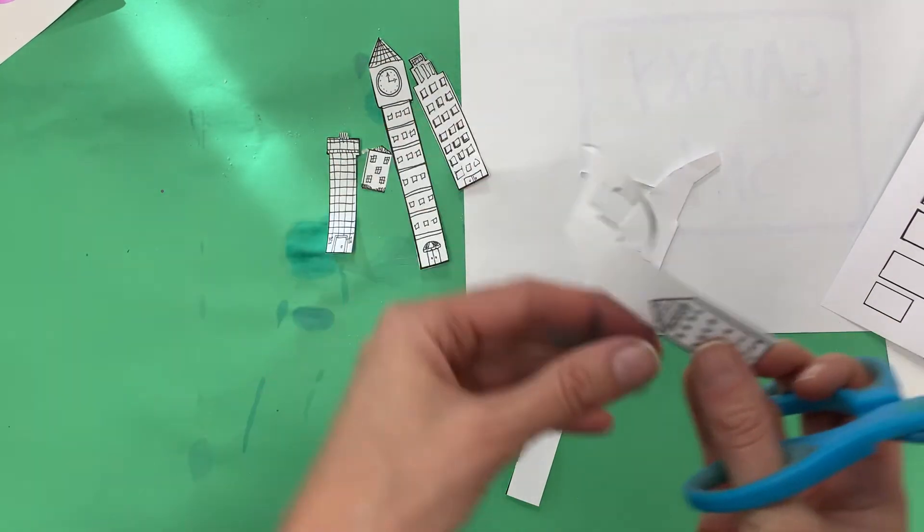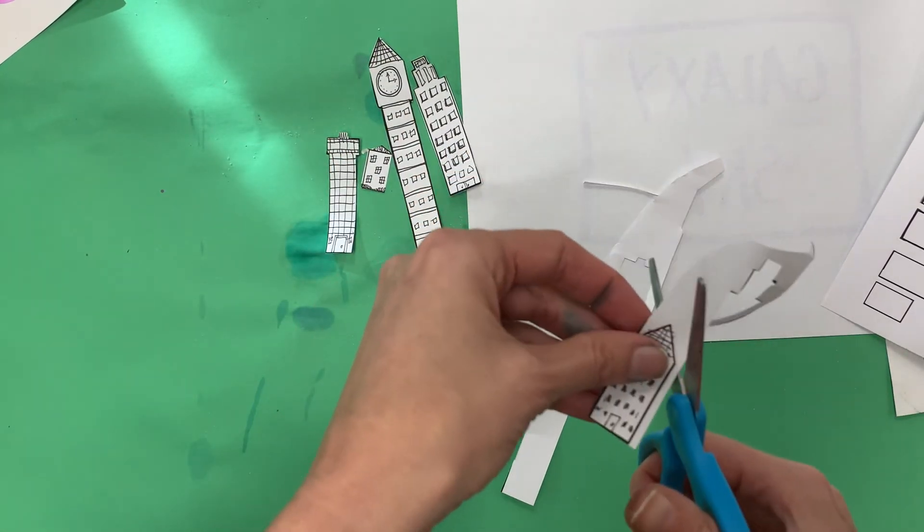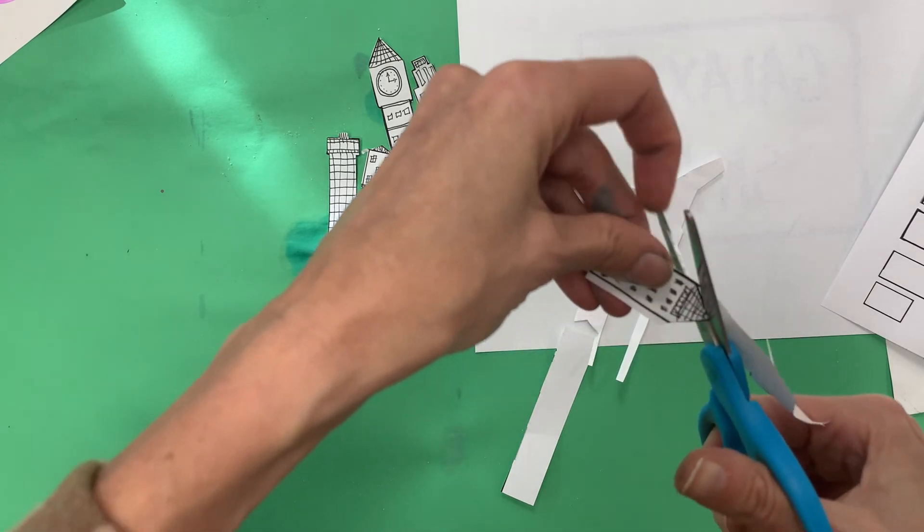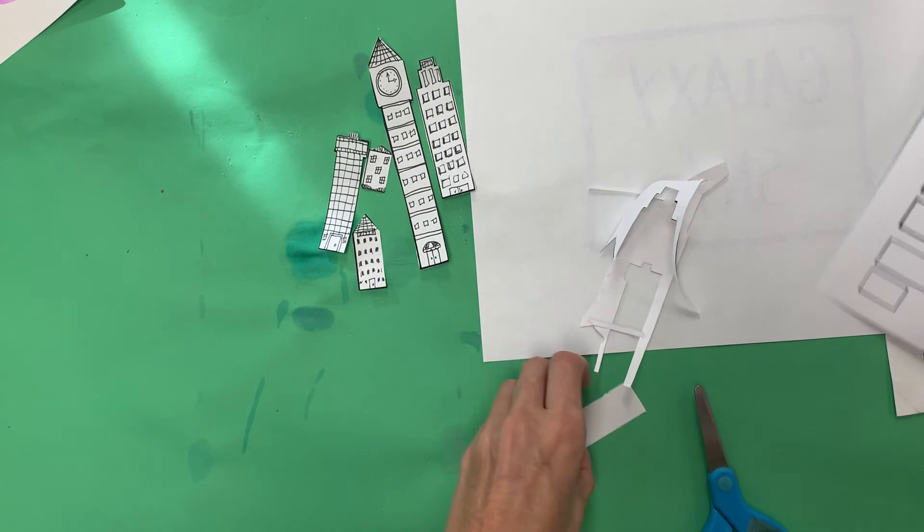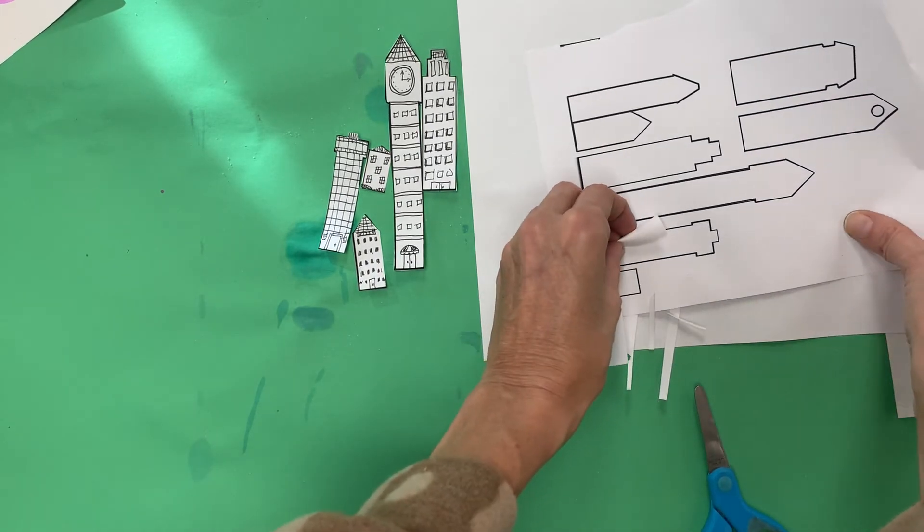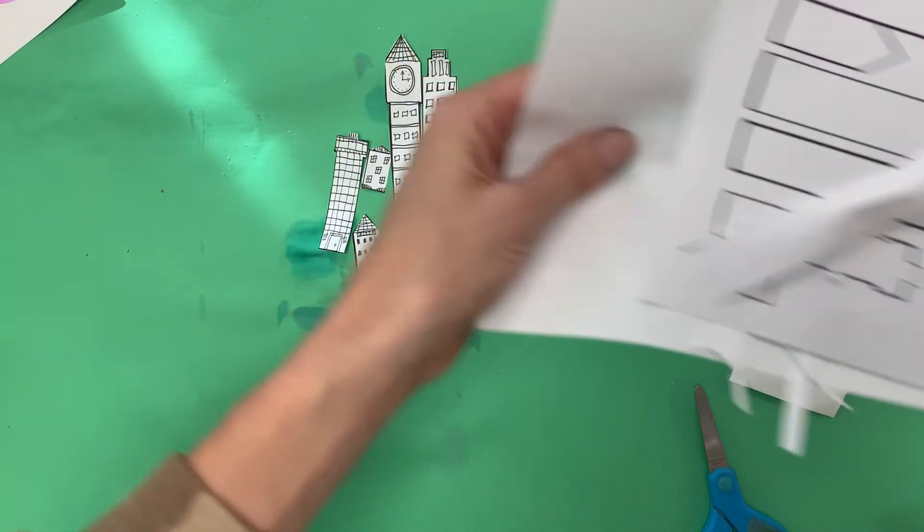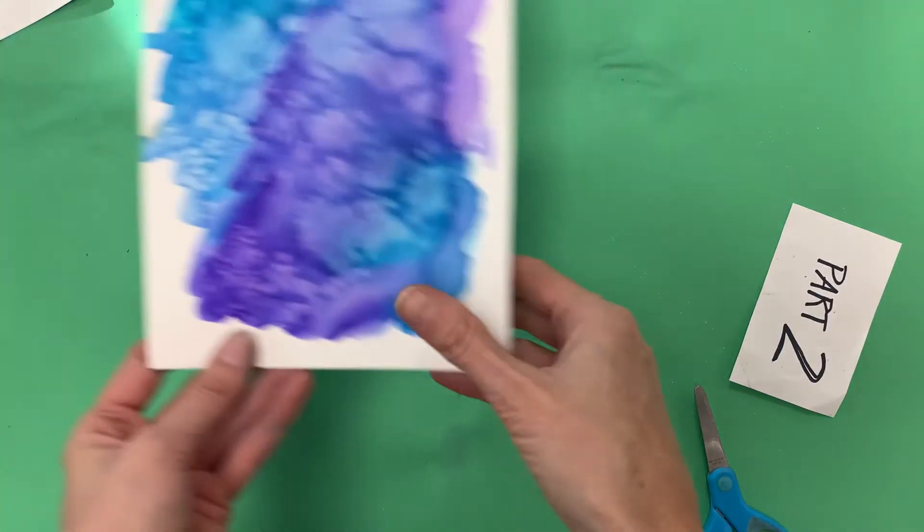Getting in those little tiny spaces there. This is a tough one, lots of little cuts to make. And last but not least, we've got number five. Trying to keep some of those black lines around there too. Okay, so I've got my five buildings. Let's clean up my space so we can have a nice area to work in, and let's go ahead and attach them to our background.